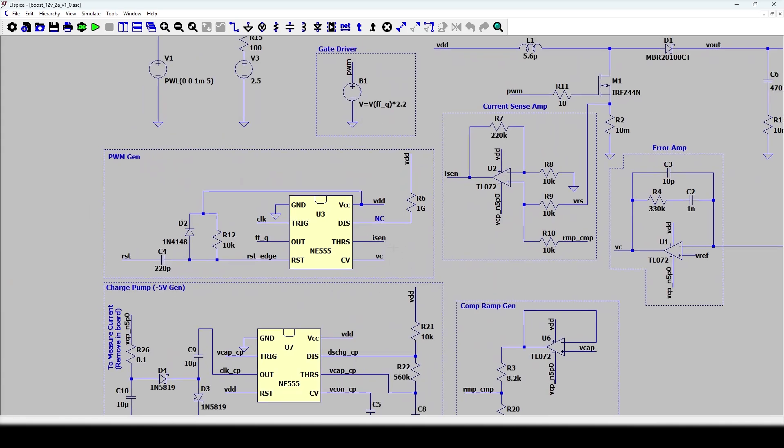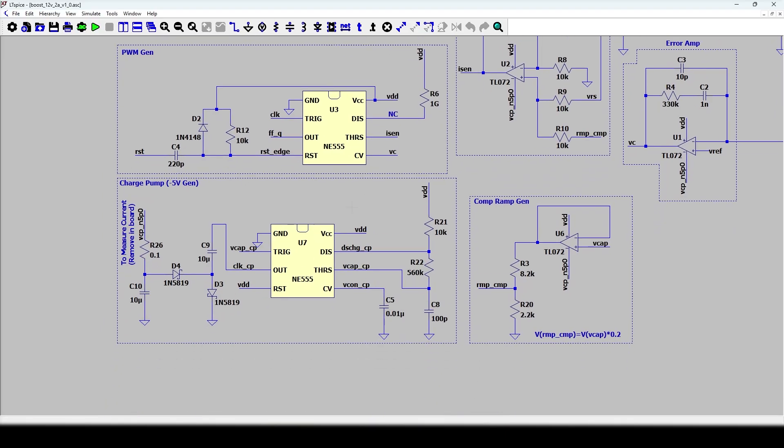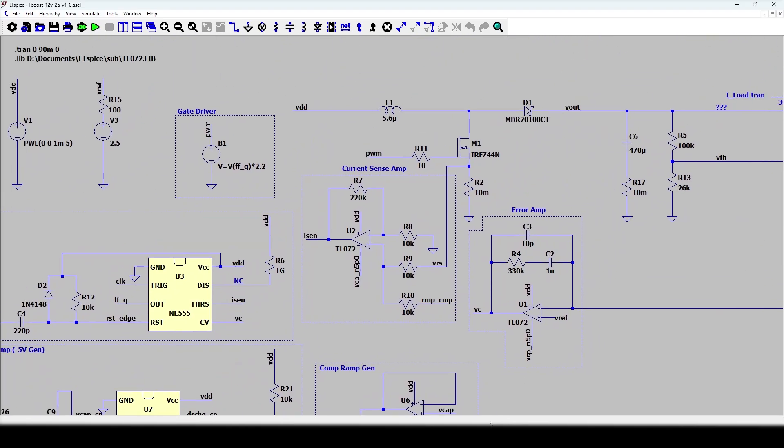Here is the type 2 compensator. This 555 timer IC in astable multivibrator mode generates the clock pulses. This 555 IC I have used as flip-flop and comparator that compares the control voltage and the current sense voltage. As the current sense voltage crosses the control voltage, the output goes low. I have used a charge pump to generate a negative 5 volt supply for the op-amp so that it can amplify the voltage across the sensor resistor which is very near to the ground voltage or 0 volt.